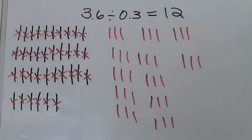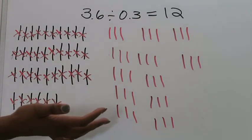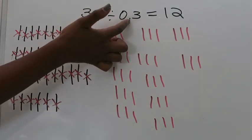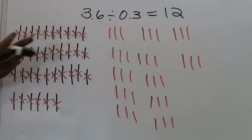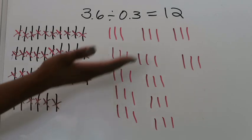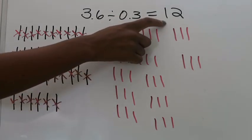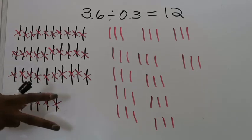Now some of you may wonder: how is it that your division problem of 3 and 6 tenths divided by 3 tenths ends up being a whole number, and ends up being larger than your dividend and your divisor? Well, because 12 represents just the number of groups you were able to create that were composed of 3 tenths from the total of 3 and 6 tenths. For example, in class this problem involved a person who had 3 and 6 tenths yards of fabric making bags that needed 3 tenths of a yard each — and this tells you she would be able to create 12 bags.